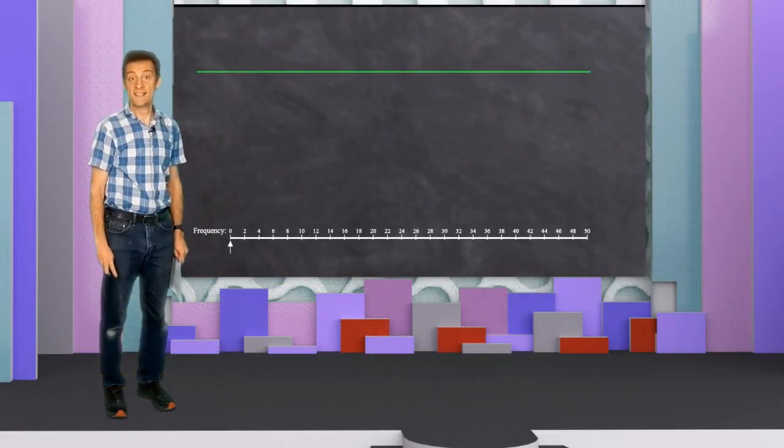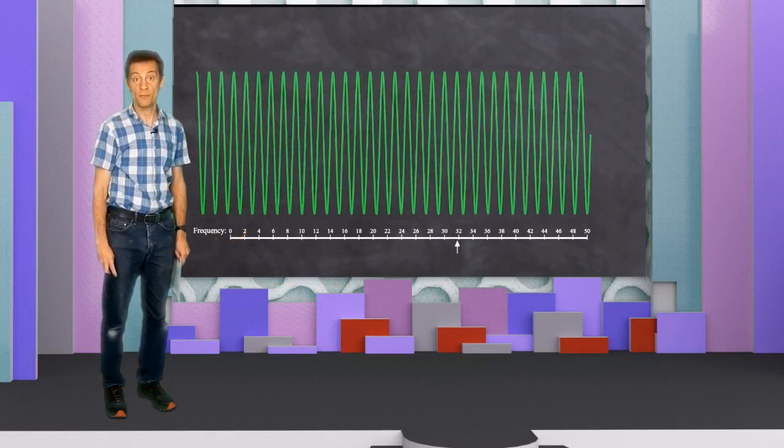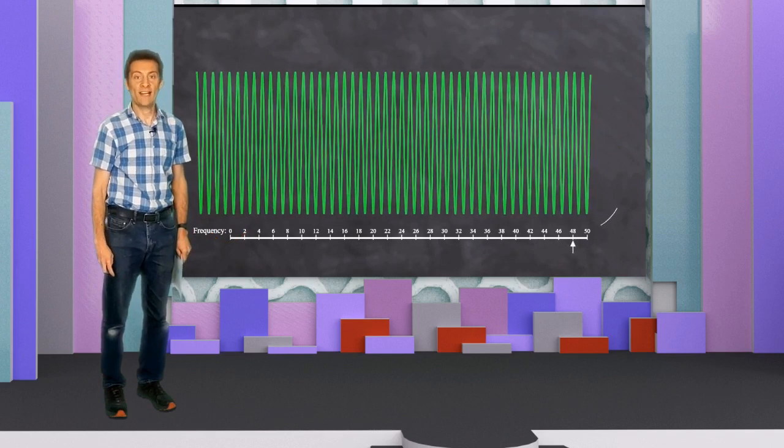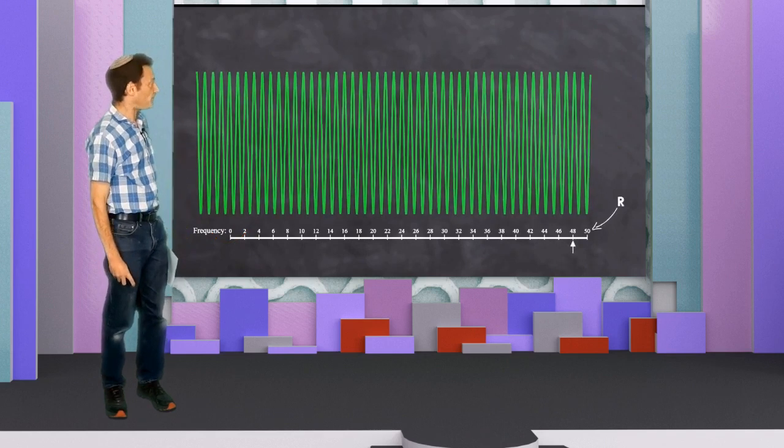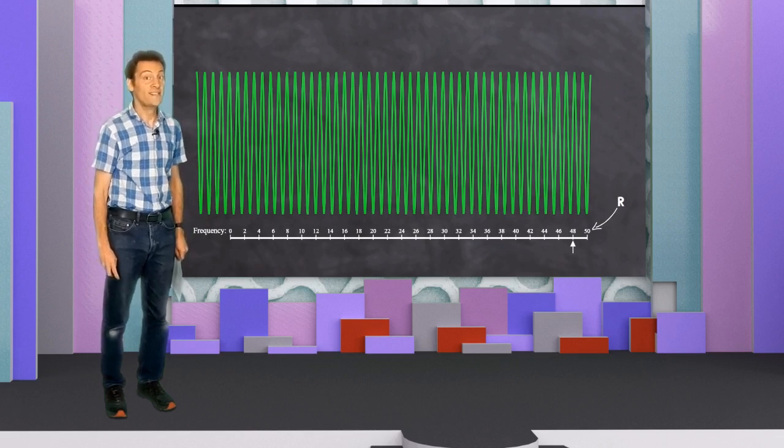The first sinusoid it will test is one with a frequency of zero. The last sinusoid it will test will have a frequency just one jump less than the sampling rate. I am going to give the sampling rate the symbol r. The rest of the frequencies are divided up into equal jumps.